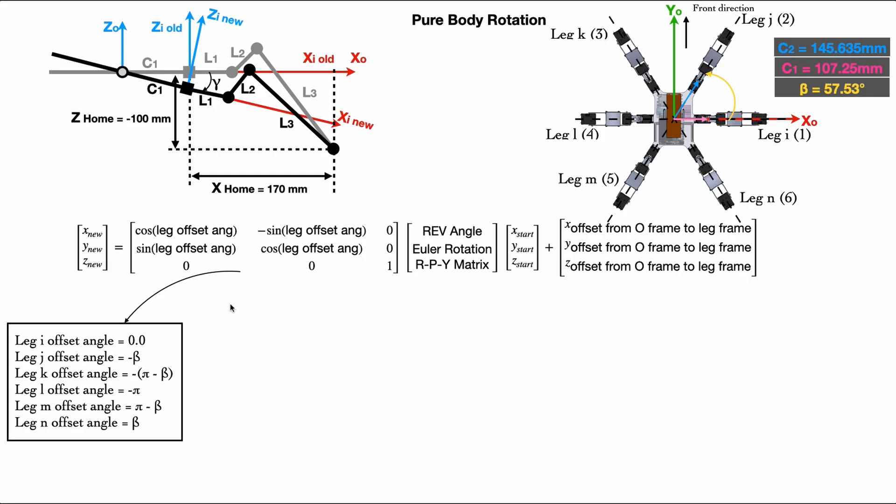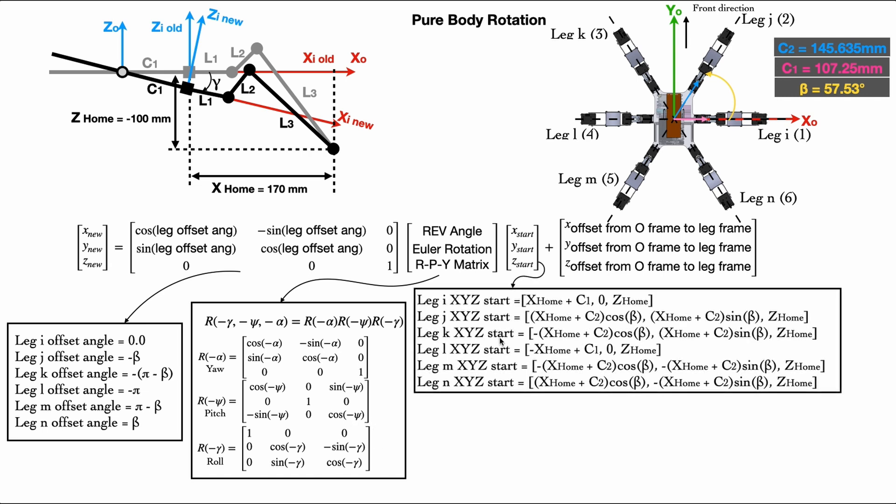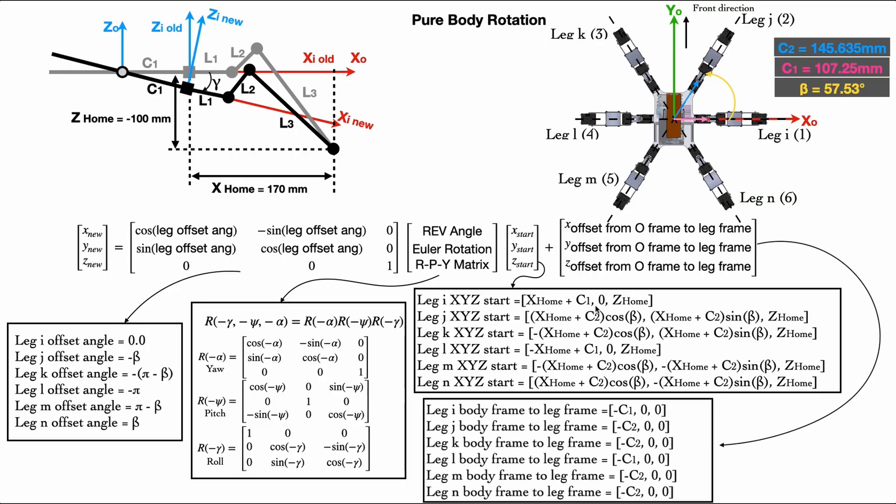We just need to plug this angle according to each leg. The other rotation matrix here, we need to use minus sign of each input angle. The reason is we input it as body frame point of view, but the calculation here is happen in leg frame point of view. Then the start position of each leg is known as shown in here. As mentioned before, the initial position we know because it was started from home position. So this is the position of each leg frame in body frame point of view. And finally, the translation offset between body frame to each leg frame are constants as shown here.